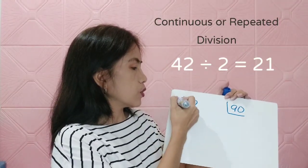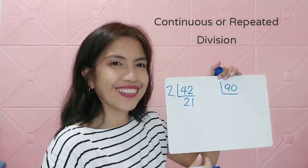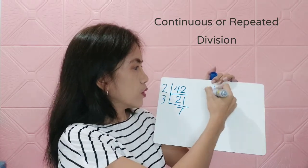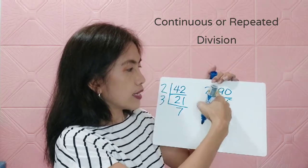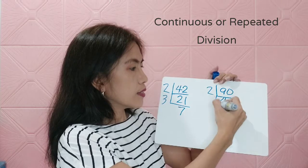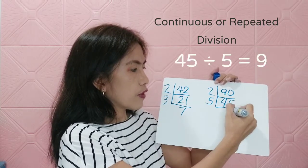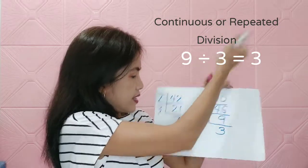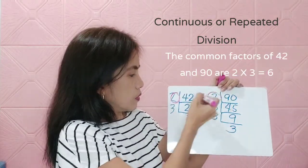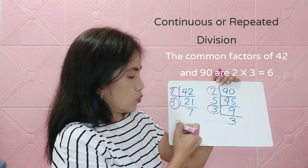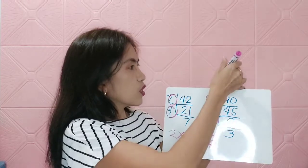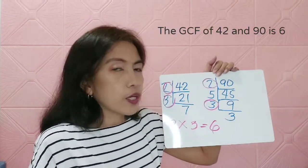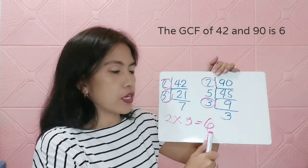Let's try continuous division for 42 and 90. Dividing by 2: 42 ÷ 2 = 21 and 90 ÷ 2 = 45. Dividing 45 by 5 gives 9, and dividing 9 by 3 gives 3. The common divisors are 2 and 3, so 2 × 3 = 6. The GCF of 42 and 90 is 6 — the same as the listing method and prime factorization.